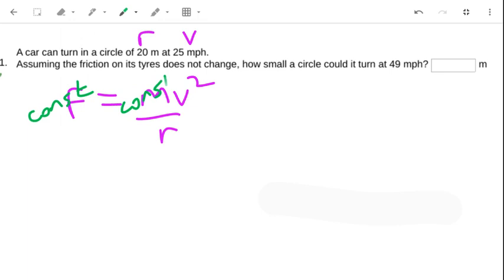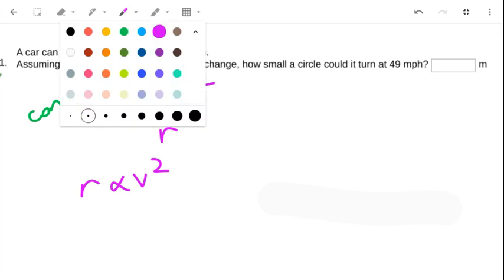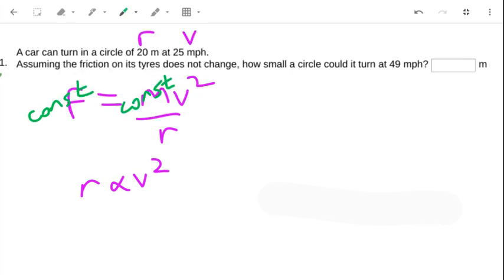And therefore we can say that if I move the radius up to the other side, r is proportional to v squared. So by whatever factor I change v, I will square it for r.